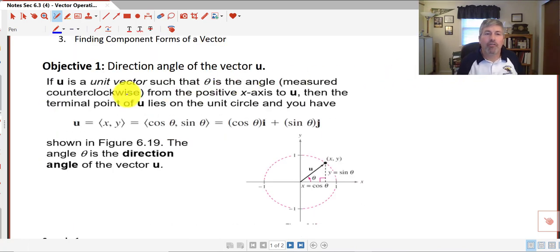In our first objective to find the direction angle of a vector u, if u is a unit vector such that theta is the angle measured counterclockwise, so from our standard position, from the positive x-axis to our vector u, then the terminal point u lies on the unit circle.